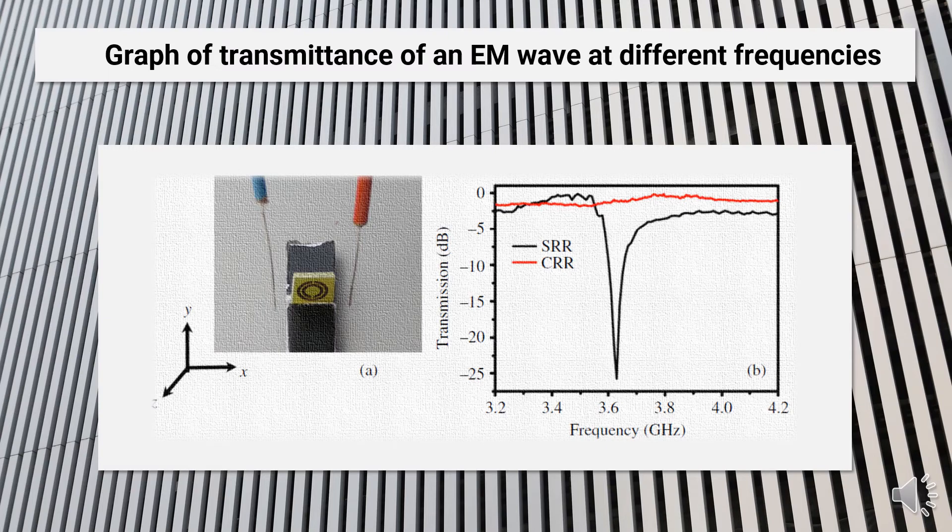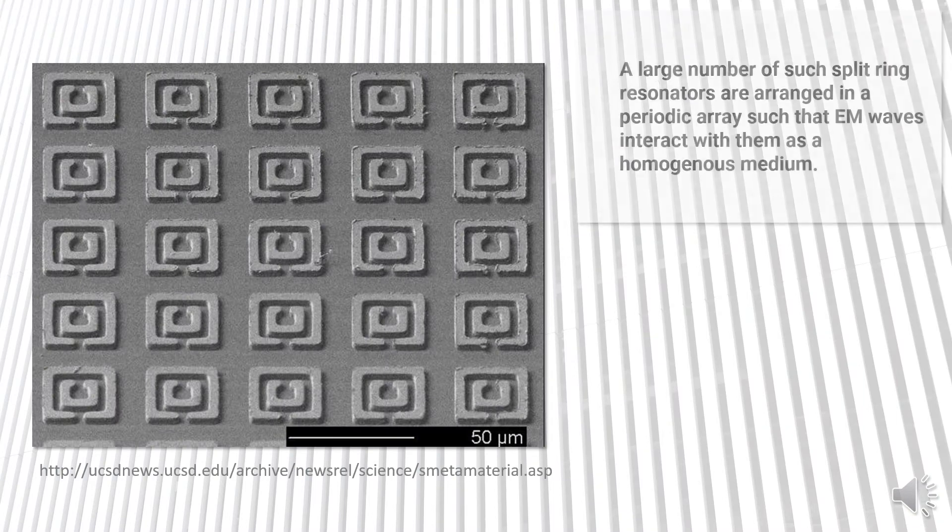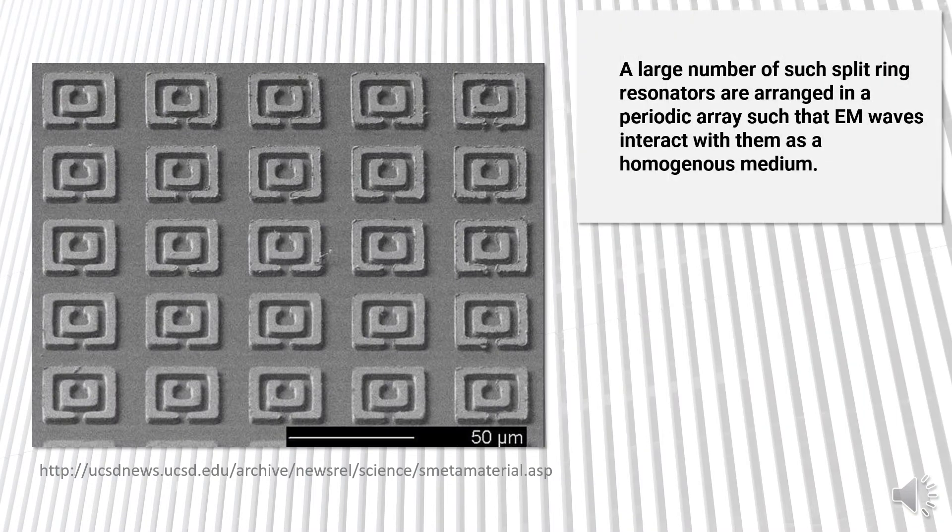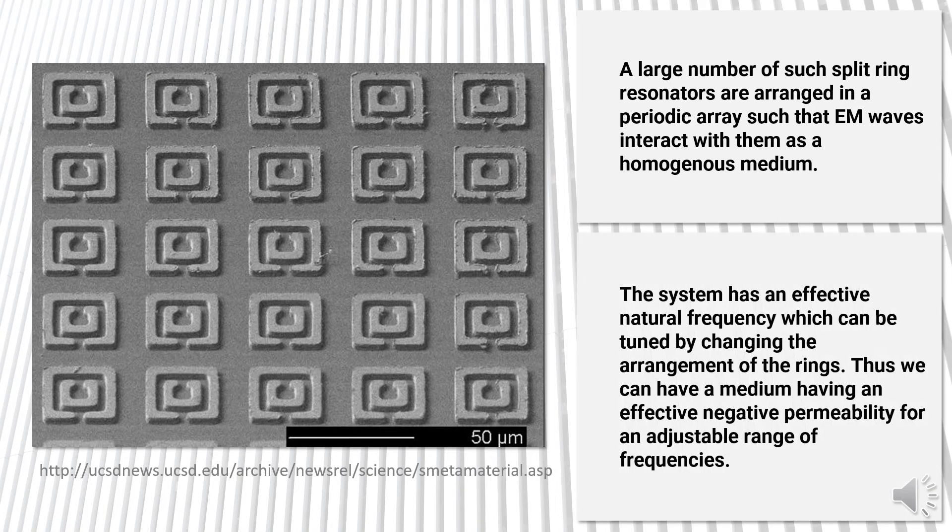A large number of such split-ring resonators are arranged in a periodic array in an orderly fashion such that the EM waves interact with them as a homogeneous medium. Also, the system has an effective natural frequency which can be tuned by changing the arrangement of these rings. Thus we can have a medium having an effective negative permeability for an adjustable range of frequencies.